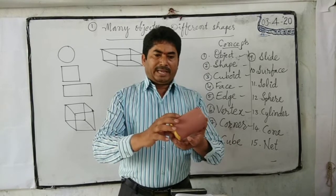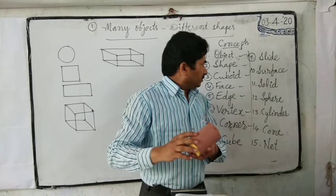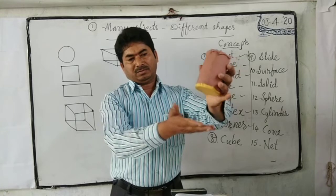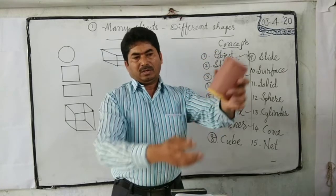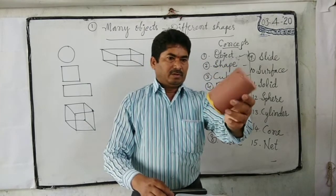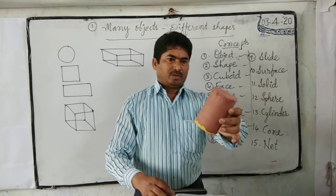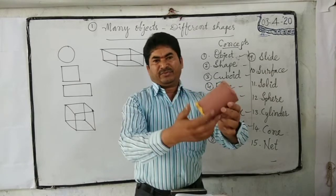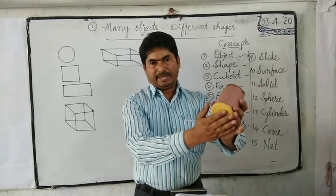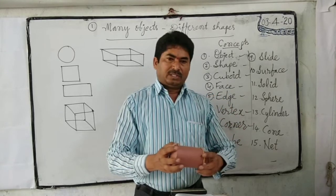Next, surface. The exterior part of an object is called a surface. An object can have a curved surface, a circular plane surface, or a flat plane surface.